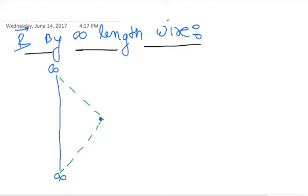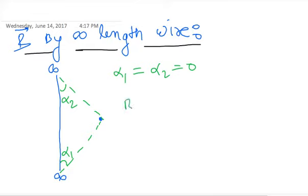So what will the value of alpha 1 be? Zero. And how will the value of alpha 2 be? Zero. So alpha 1 is equal to zero and alpha 2 is equal to zero. So B is equal to mu naught upon 4 pi...